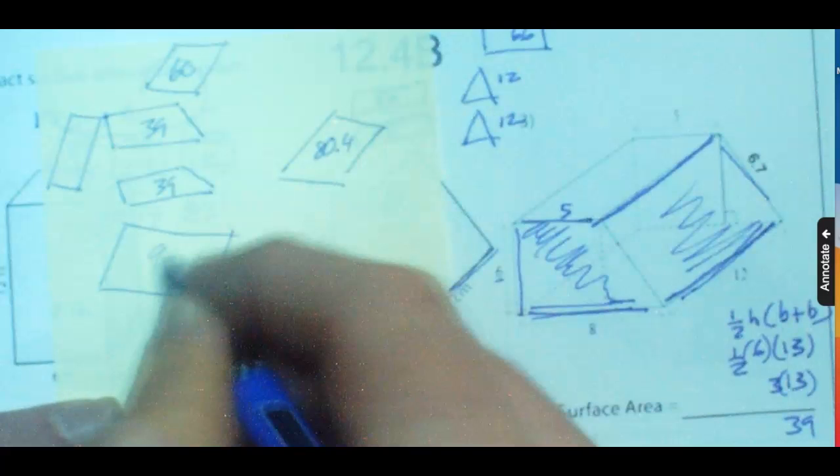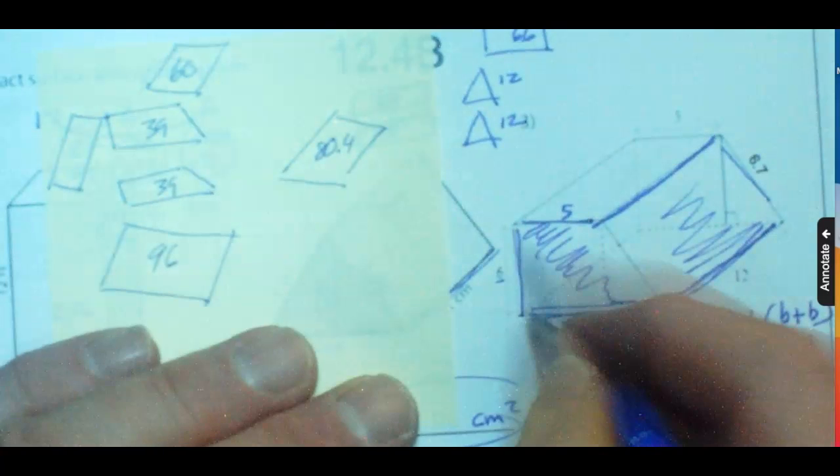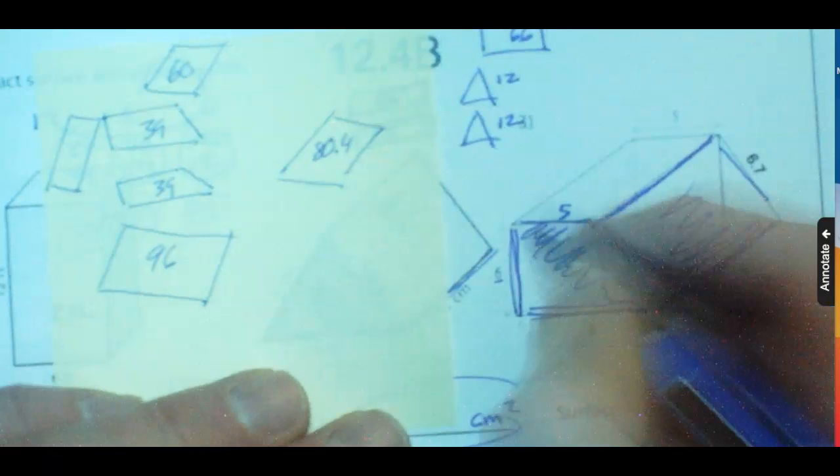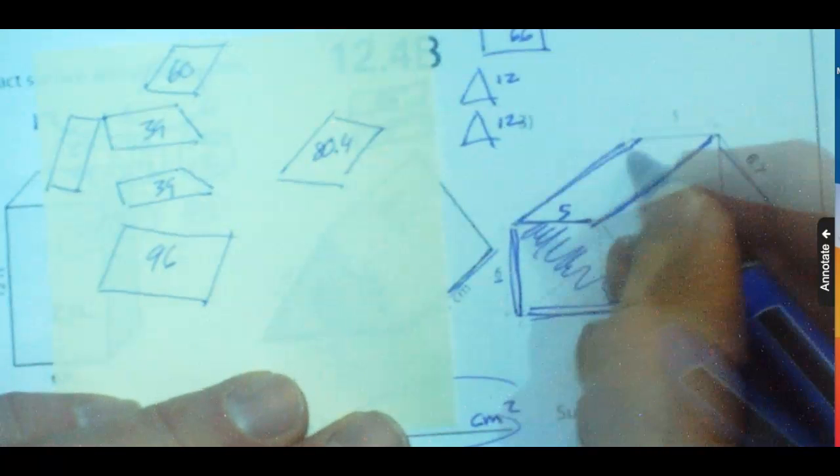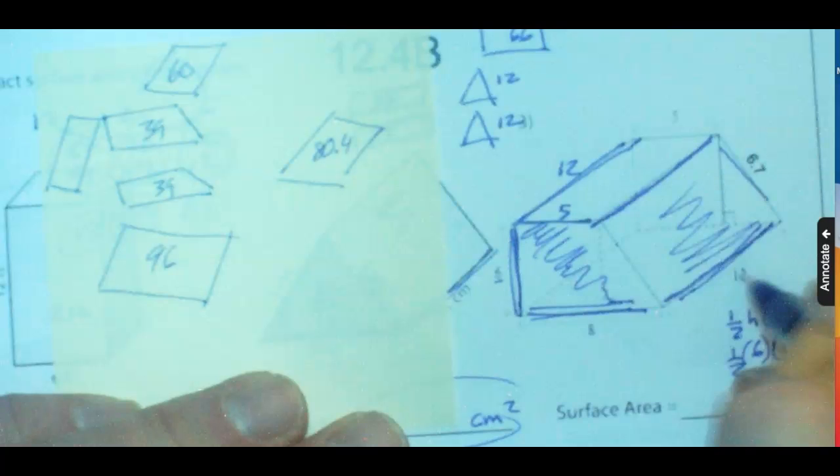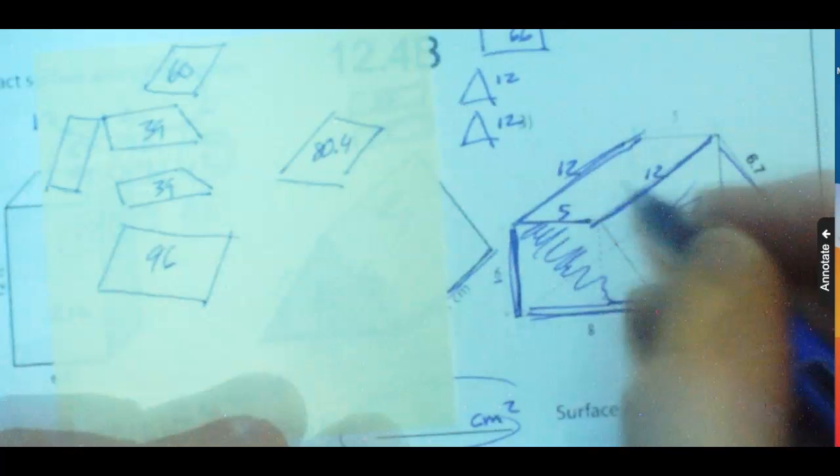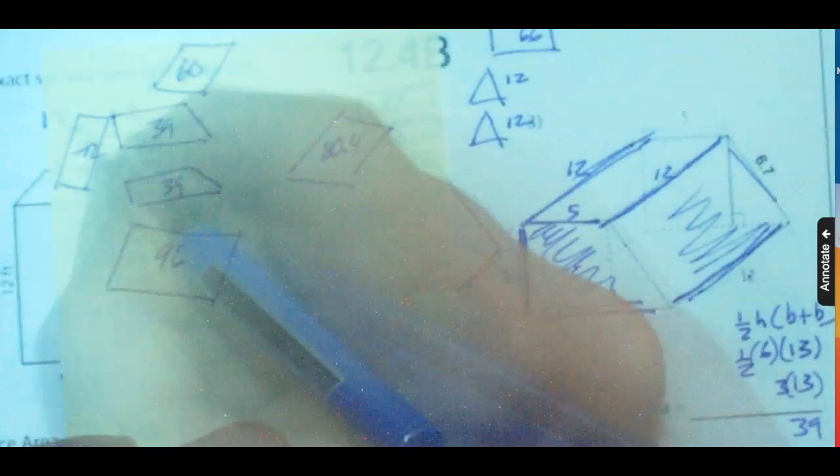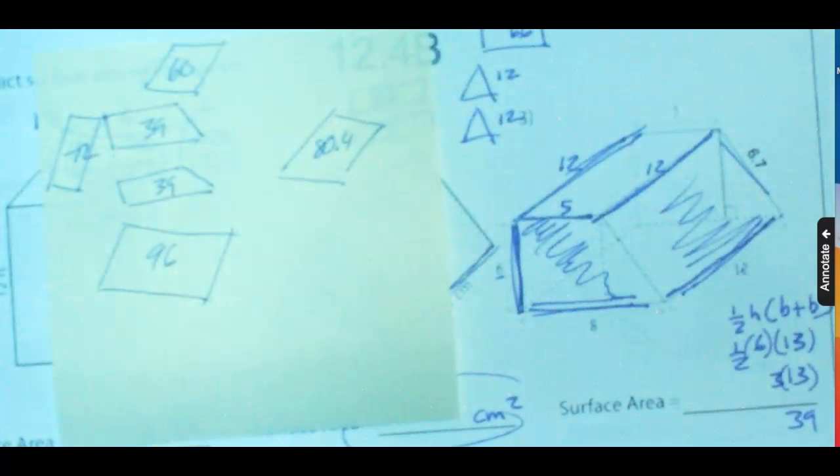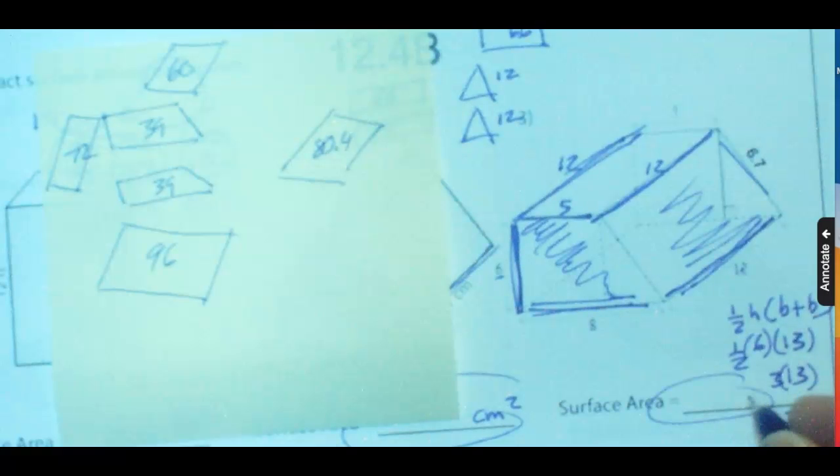And then we just have this back piece, which is going to be 6 times 12. 6, because the 12 is here, 12 is here, this 12 is here. We just carry that measurement across 6 times 12, which is 72. And again, add all those measures up. And this is going to be in units squared, because there's not a label there.